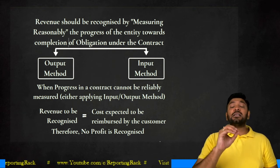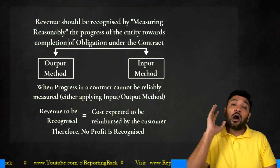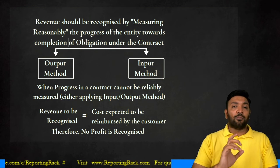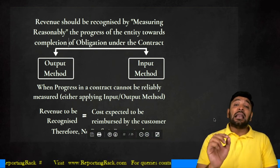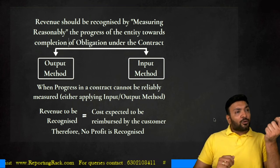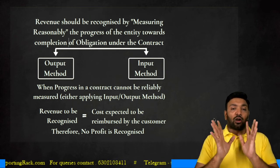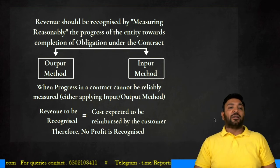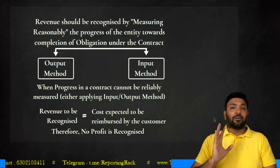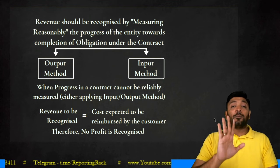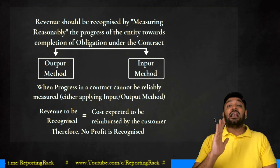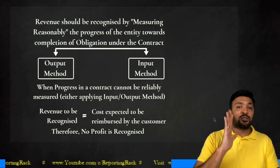Output method means measuring actual output delivered rather than cost incurred — for example, four floors completed out of five is 80 percent. If neither input method nor output method can reliably measure the progress, then revenue is recognized only to the extent of cost eligible to be reimbursed by the customer. For example, if I incurred 100 rupees and expect the customer to reimburse 85 rupees even if the contract stops, then 85 rupees is revenue with no profit recognized.